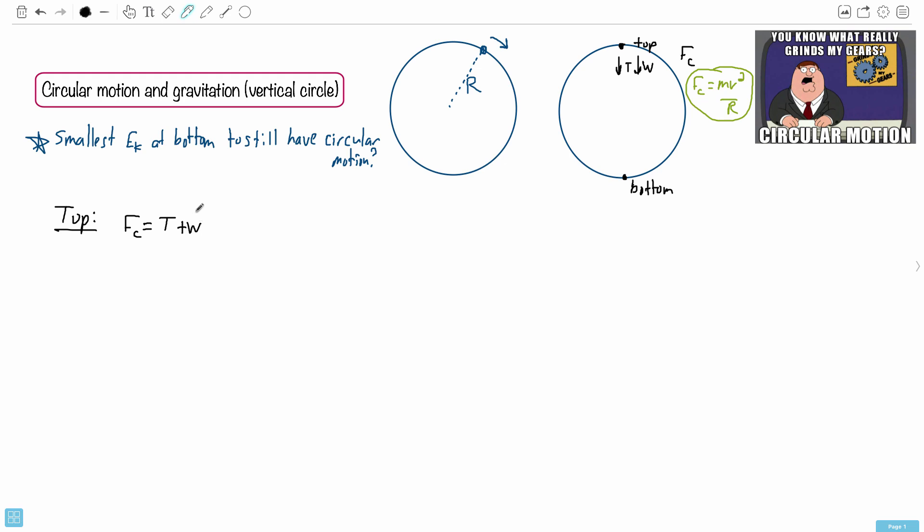At the top, the centripetal force is this center-seeking force. It's going to be equal to, notice the tension and the weight are in the same direction, so the tension plus the weight. That's because of Newton's second law. This is the resultant force caused by this plus this. The minimum kinetic energy at the bottom in order to still make circular motion is when tension equals zero. That's your key thing. So I'm going to put that equals zero, and therefore I have FC equals W. The centripetal force is equal to the weight.